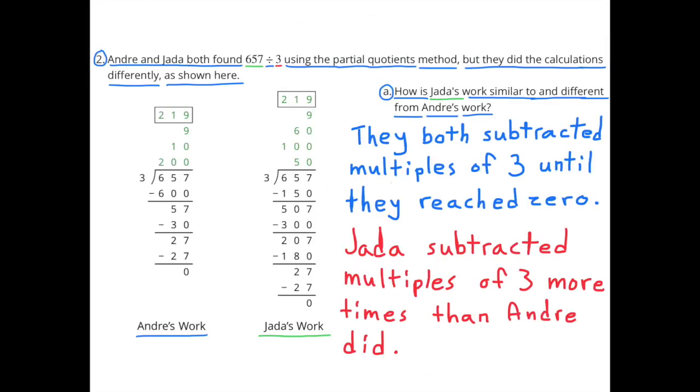Number 2. Audrey and Jada both found 657 divided by 3 using the partial quotients method, but they did the calculations differently as shown here. Part A: How is Jada's work similar to and different from Andre's work?